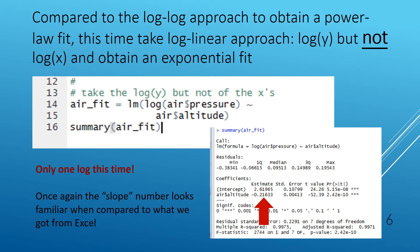In lines 14 and 15 we have a name for our fit, air_fit, equals lm open parenthesis. We're taking the log of the y's so it's log(air$pressure) — pressure was the y's — tilde air$altitude, then close the parenthesis. When using the linear model it's y tilde x, and the x in this case is air$altitude. So one more time: the log is taken of the y's but not of the x's.